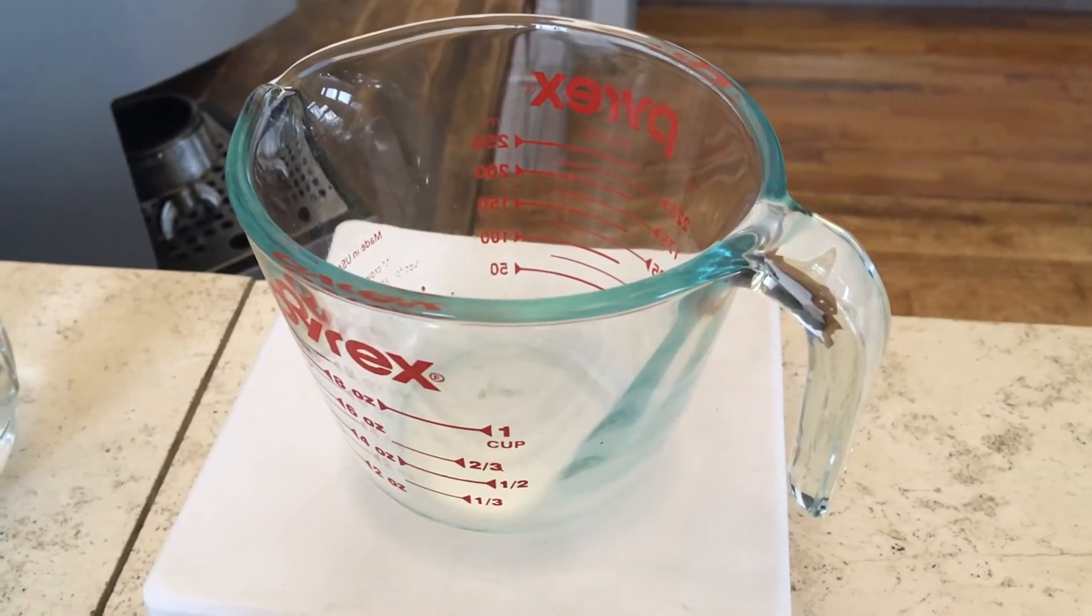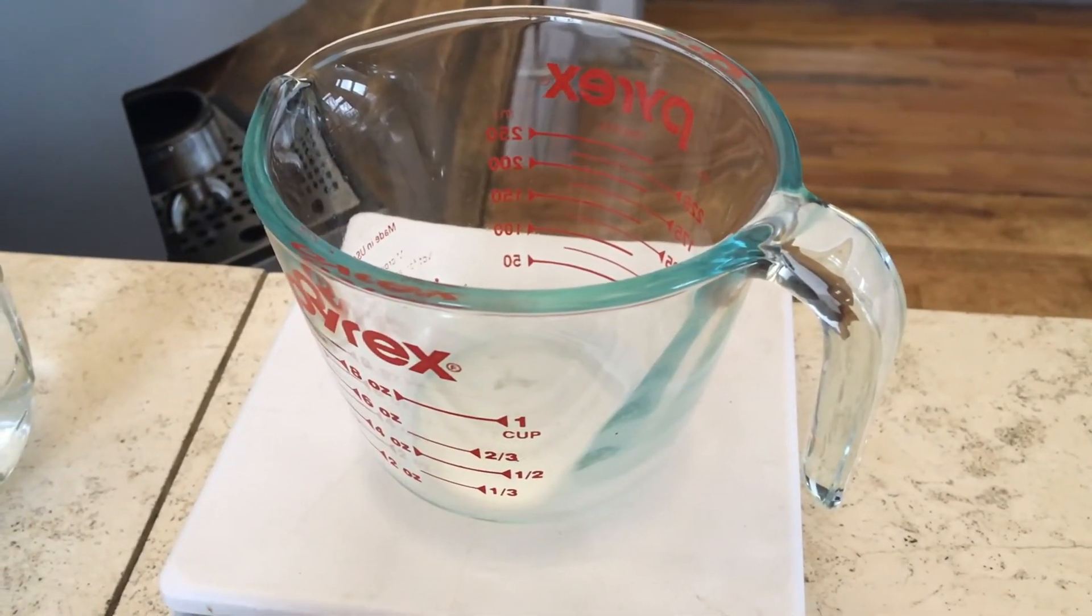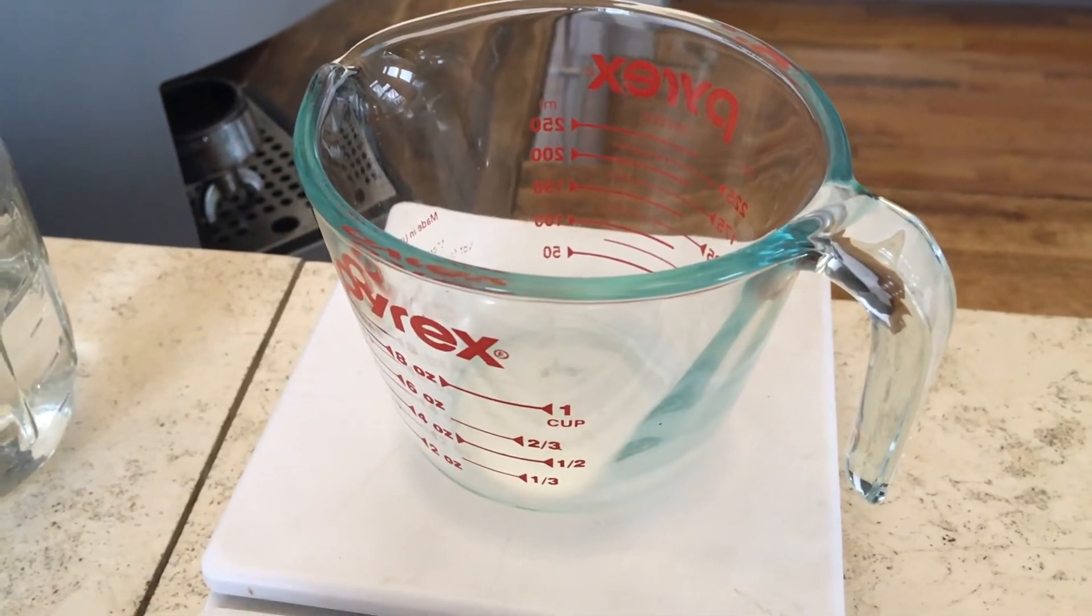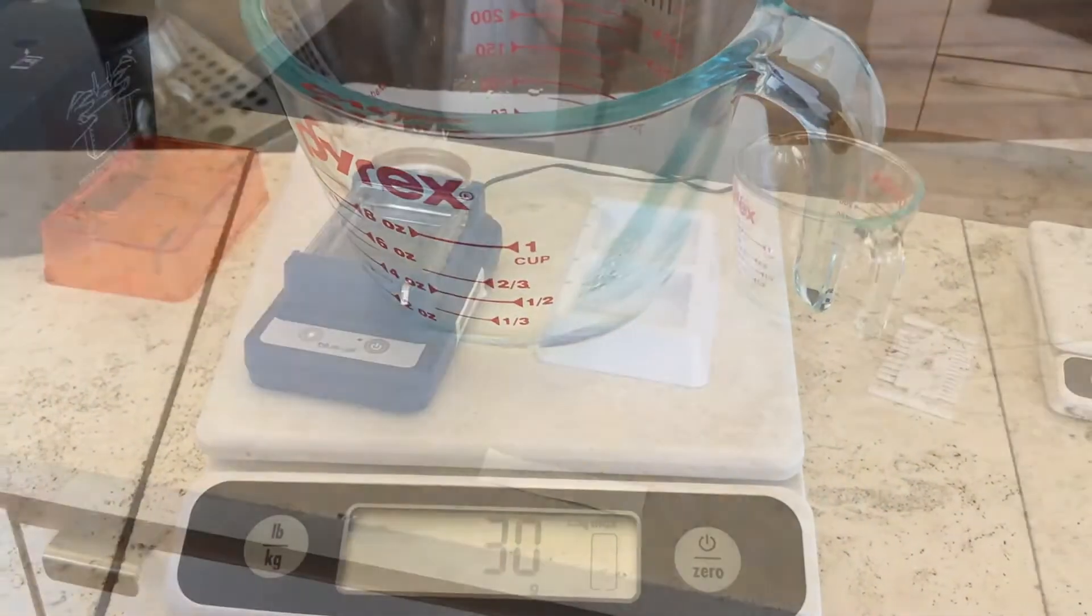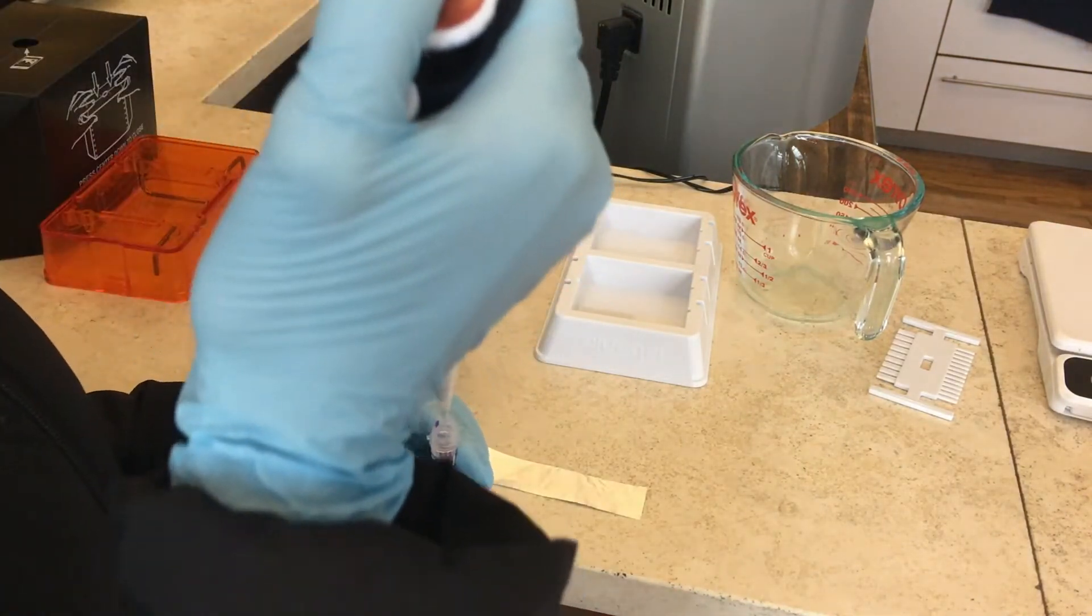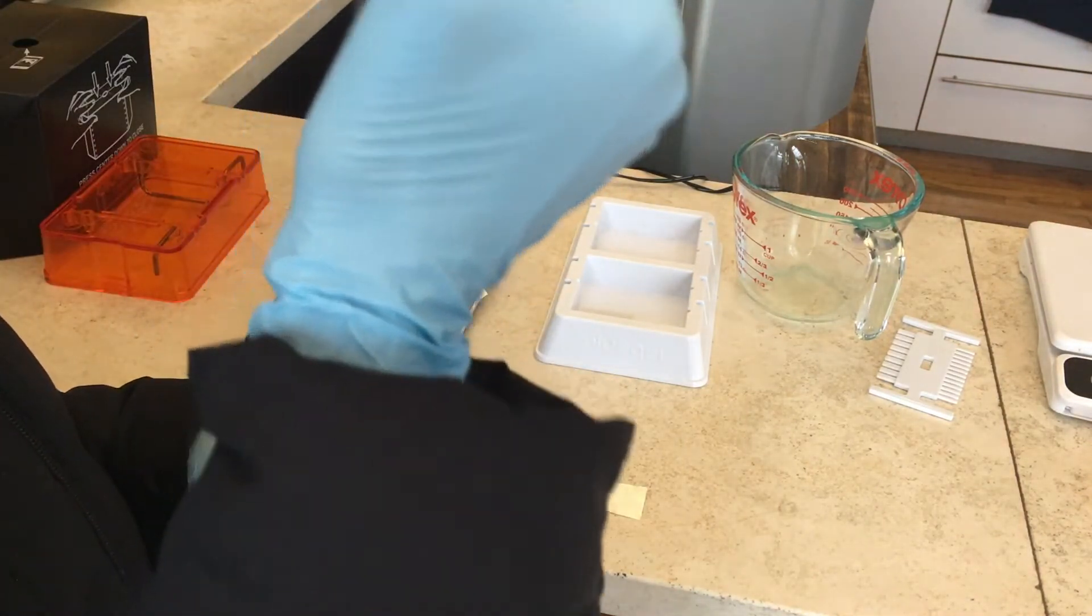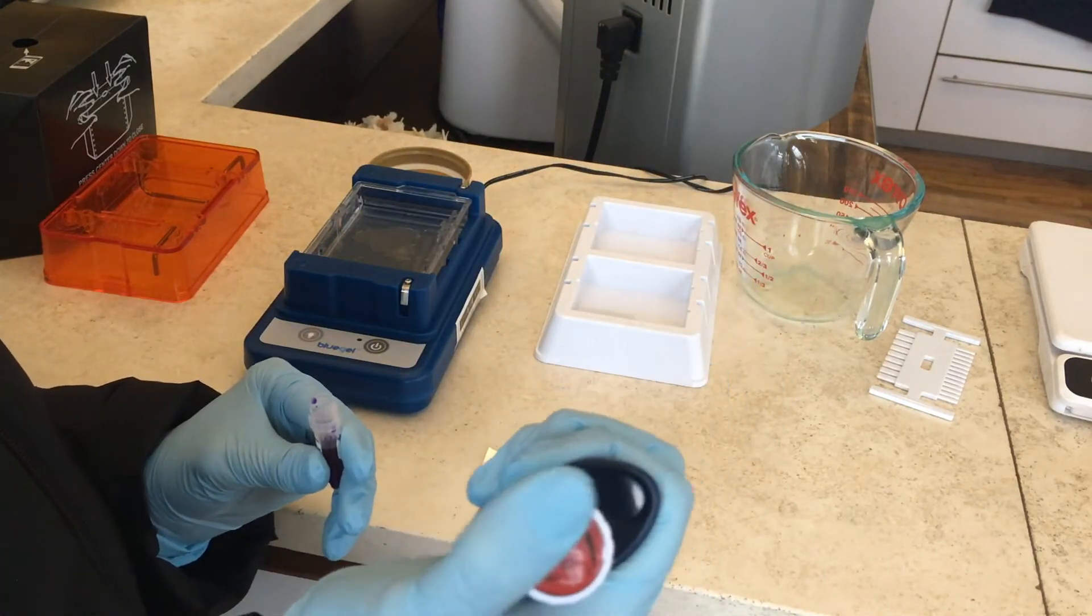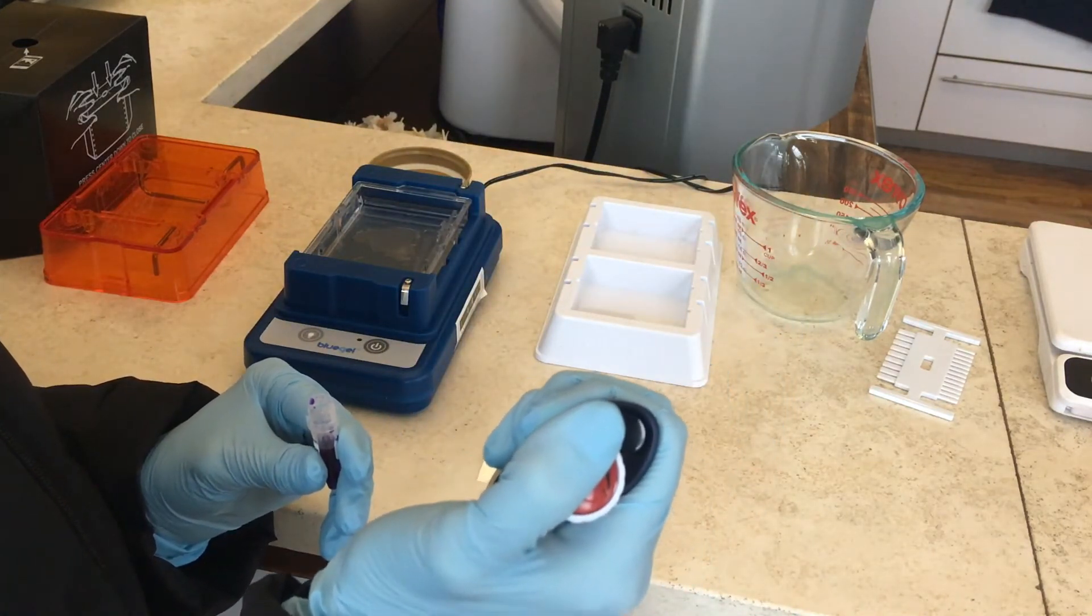We're going to have to put about 30 milliliters of the TBE buffer into the glass jar because that's what we're going to pour over the gel. And then what we're going to have to do is put eight drops of the loading dye onto a strip of aluminum, about three microliters per dot. So I'm going to just do them one by one.